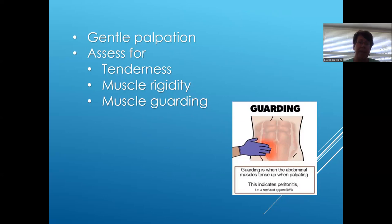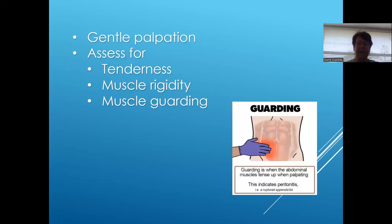To evaluate for appendicitis, you first start with gentle palpation of the whole abdomen, leaving the right lower quadrant for last. You want to assess for tenderness and muscle rigidity. Muscle rigidity is that involuntary stiffness of the abdominal wall muscle and usually will indicate peritonitis. You also want to assess for muscle guarding as you palpate, because guarding indicates some type of inflammation or could also indicate peritonitis.